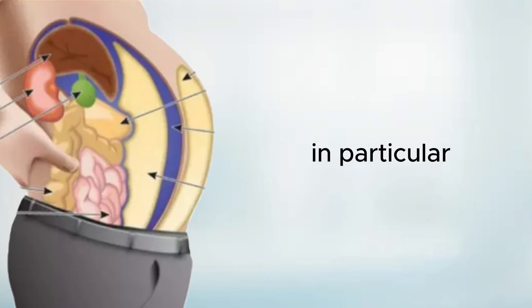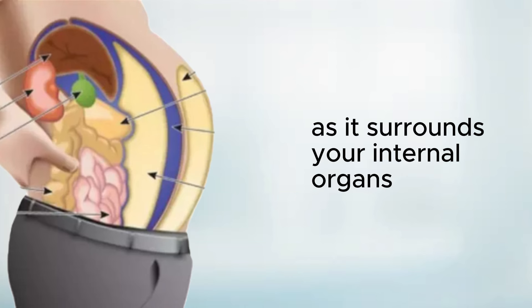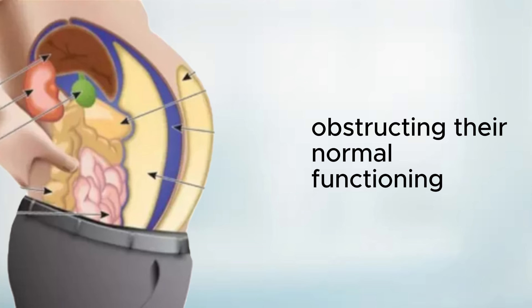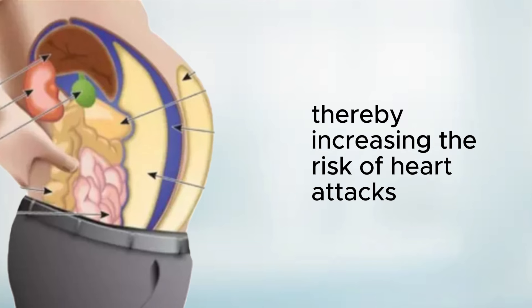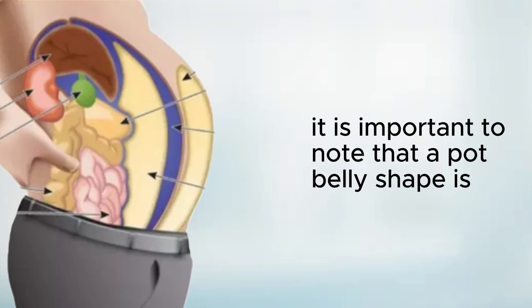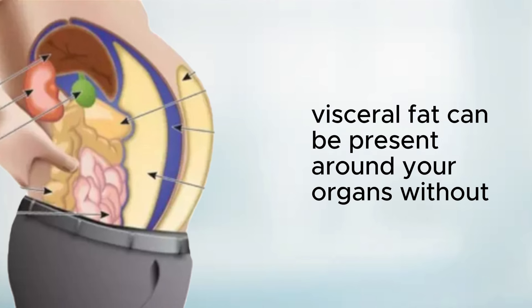Visceral fat, in particular, poses significant health risks as it surrounds your internal organs, obstructing their normal functioning and potentially raising blood pressure, thereby increasing the risk of heart attacks. It is important to note that a pot belly shape is not the sole indicator of a fatty liver. Visceral fat can be present around your organs without your awareness.